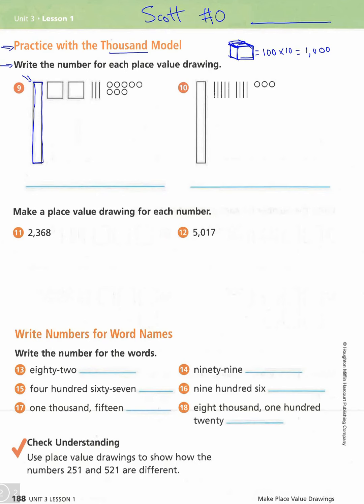Your task for problems 9 and 10 is to tell us what number each of those drawings represents. Then for problems 11 and 12, make your own place value drawings for the given numbers. Go ahead and pause the video, and when you're done, start it back up and we'll look at the bottom section.